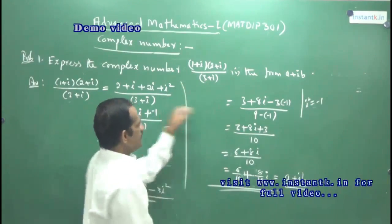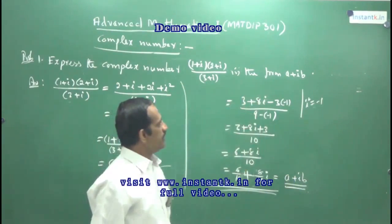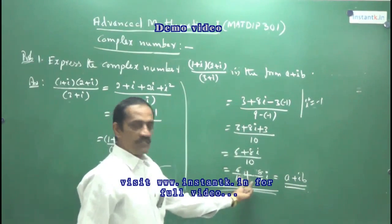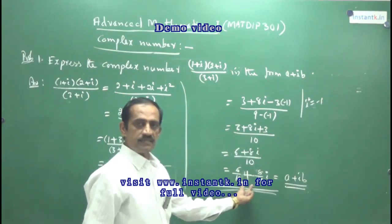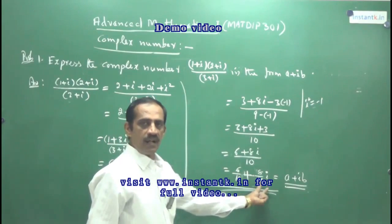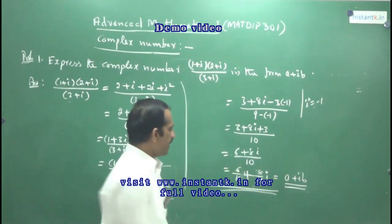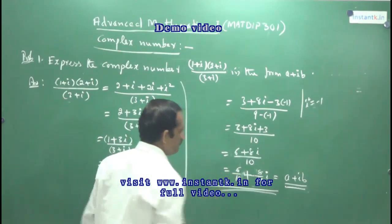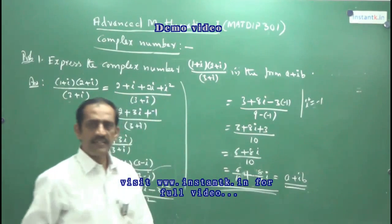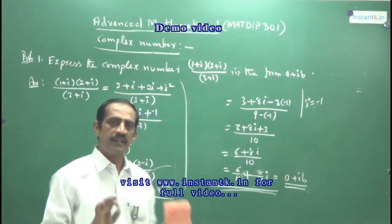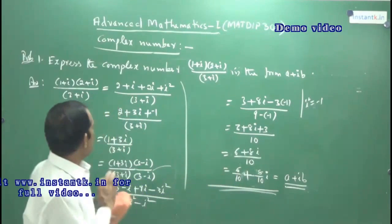So, write the complex number in the form a plus ib — or equivalently x plus iy. Like that, one question will always be asked: write the complex number in the form a plus ib.